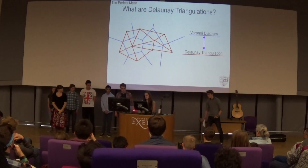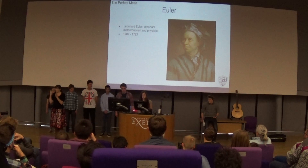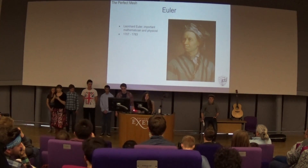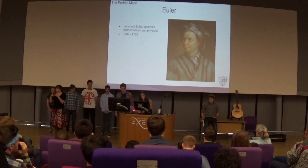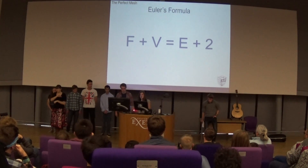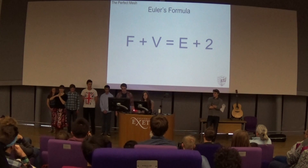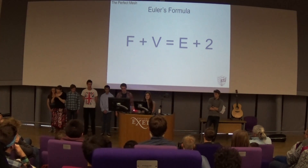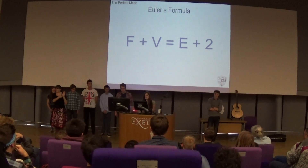Something that connects all of these is Euler's formula. Euler was an important mathematician and physicist who lived in the 18th century, vital in the development of geometry, especially topology. His formula that applies to our project is: F plus V equals E plus 2, where F is faces, V is vertices, and E is edges on a 3D shape. This formula describes the relationship between these three properties on 3D shapes only.